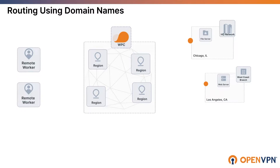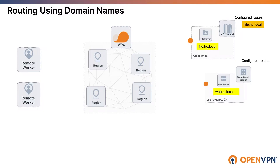We want to reach our file server with file.hq.local and the web server with web.la.local. To accomplish this, we just need to configure file.hq.local as a route for the HQ network and do the same for our west coast branch, configuring web.la.local as a route for that network.